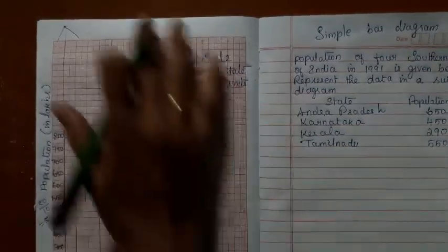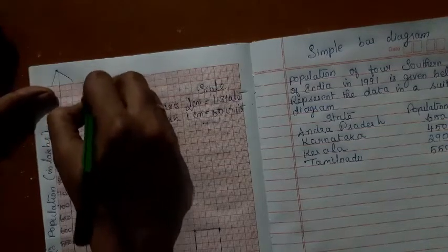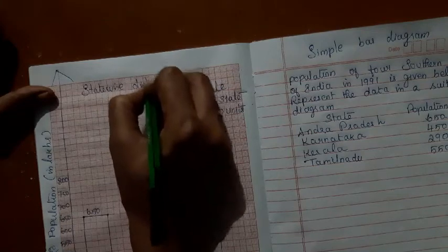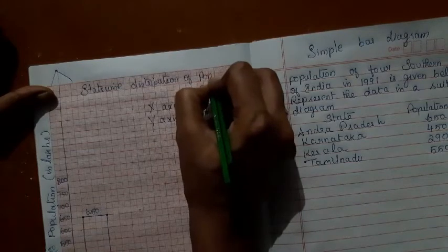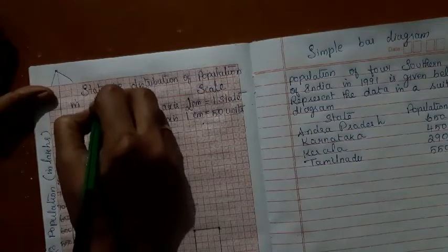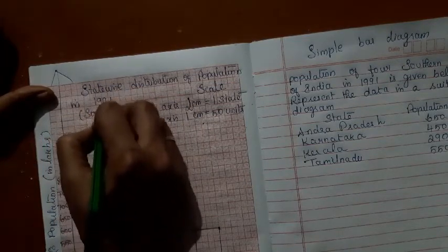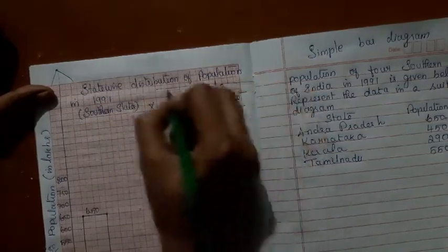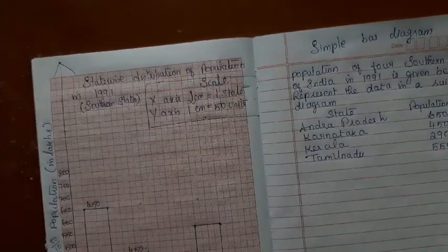So, let us give a title for this diagram. It is state-wise distribution of population in 1991. Within the bracket, you can write southern states. Southern states of India. Fine.